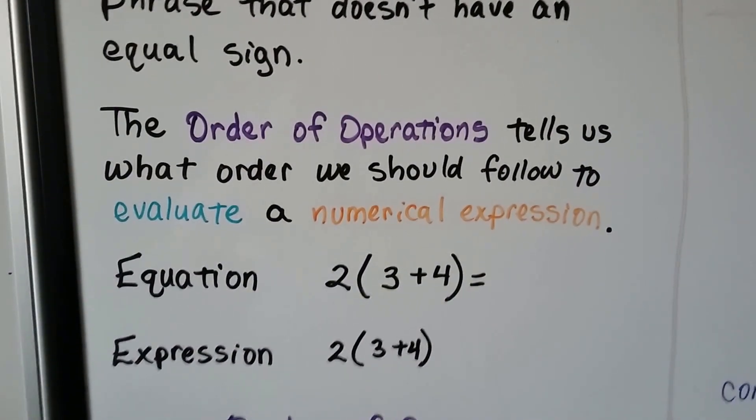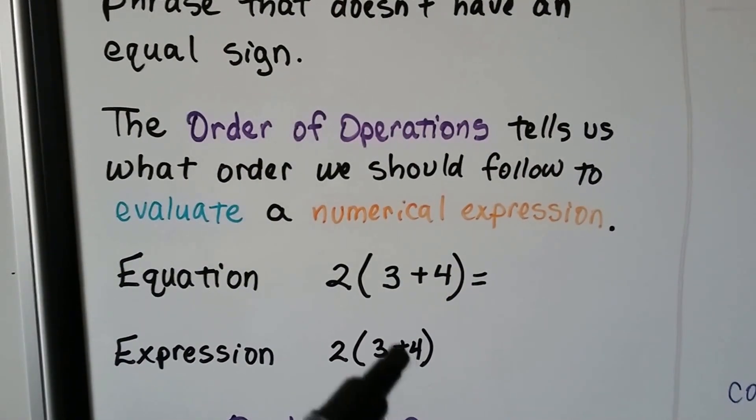So an equation has an equal sign, like this, and an expression doesn't. That's the only difference.